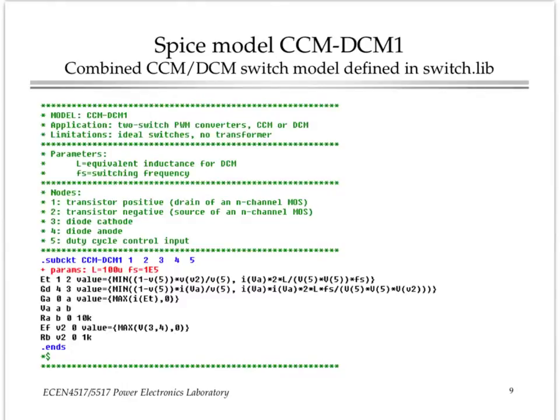So these can be put together into an equivalent circuit model for discontinuous conduction mode, but even better, we can have a combined CCM-DCM model. It's called CCM-DCM1. It's also contained in the switch.lib library, that is capable of representing large signal average behavior of the switch network in both the continuous conduction mode and discontinuous conduction mode.